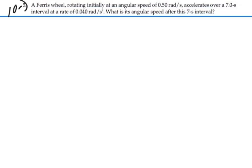Here's problem 10-5. A ferris wheel rotating initially at an angular speed of 0.5 radians per second accelerates over a 7 second interval at a rate of 0.04 radians per second squared. What is its angular speed after this 7 second interval?